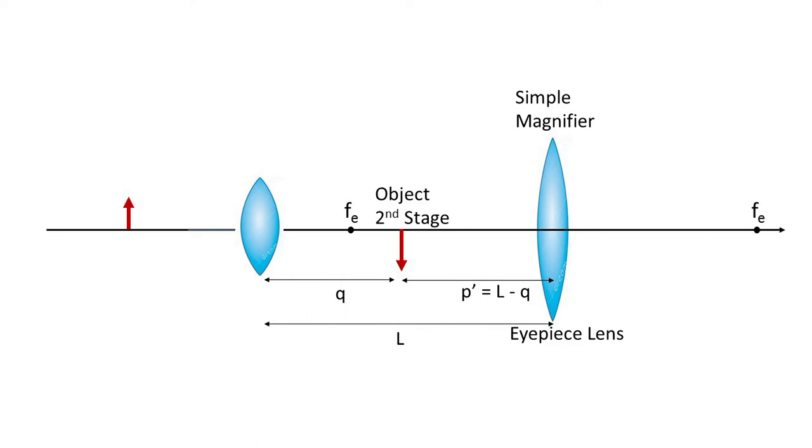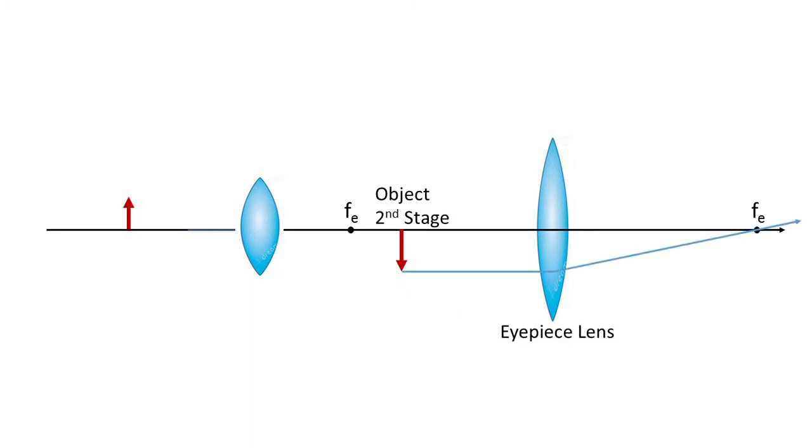Given that L is the separation distance between the two lenses, the new object distance p prime is given by L minus q. Again, we begin the ray trace analysis with a ray parallel to the principal axis that is deflected by the converging eyepiece through the focal point.